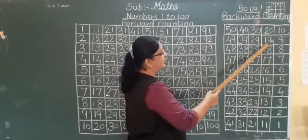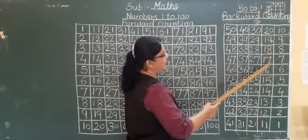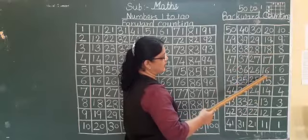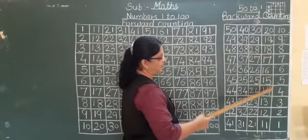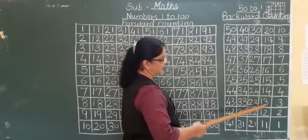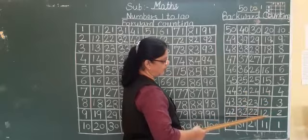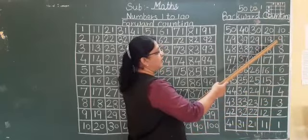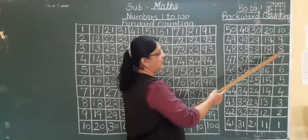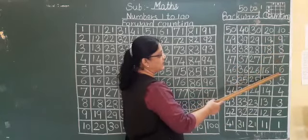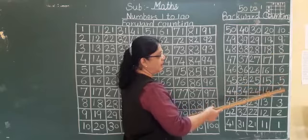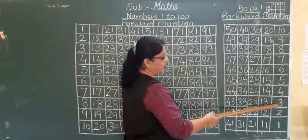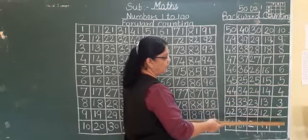Okay? 20, 19, 18, 17, 16, 15, 14, 13, 12, 11. 10, 9, 8, 7, 6, 5, 4, 3, 2, 1. Okay?